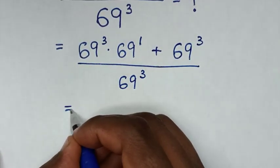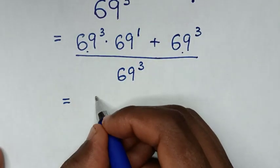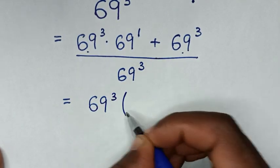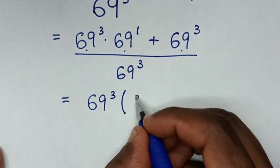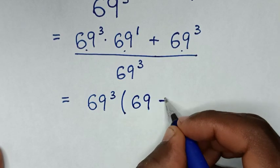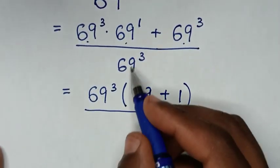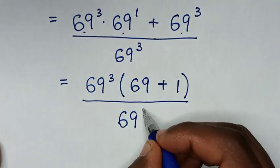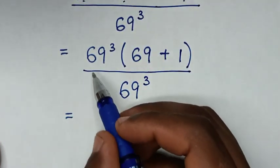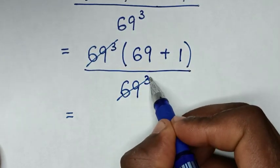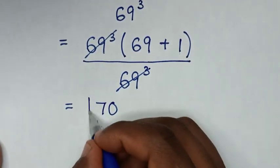Then it will be equal to: from the numerator 69 power 3 is common, so we take 69 power 3 out of the bracket. This divided by this is 69 power 1, which is 69. Then plus this divided by this is 1, in bracket, over 69 power 3. Then this 69 power 3 will cancel with the denominator 69 power 3. So 69 plus 1 is 70. Therefore this is our final answer.